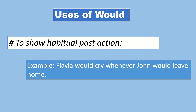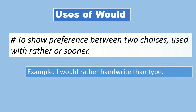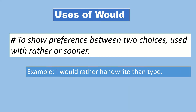Another use of 'would' is to show habitual past action. For example: 'Flavia would cry whenever John would leave home.' This is used for habitual past actions. 'Would' is also used to show preference between two choices, used with 'rather' or 'sooner.' For example: 'I would rather handwrite than type.'